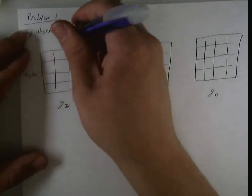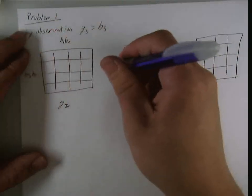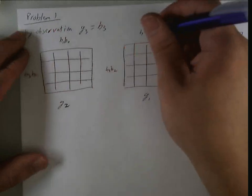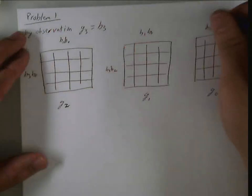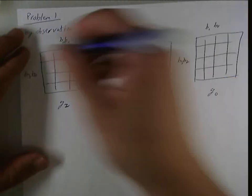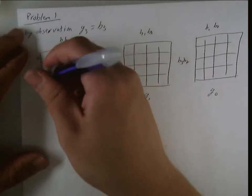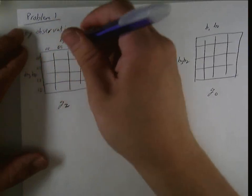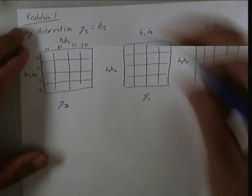And my inputs will be b3, b2, b1, b0, and likewise. And I won't fully label these, just to save time on this video. So I'll just do this one, and we'll keep the same labeling for the remainder.